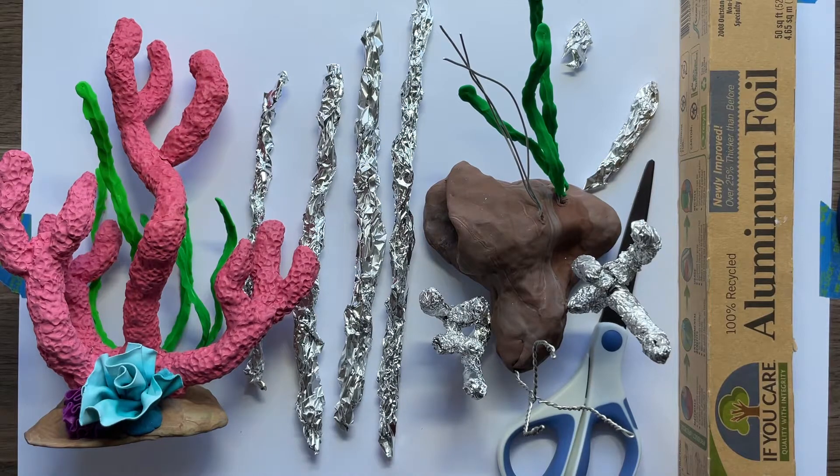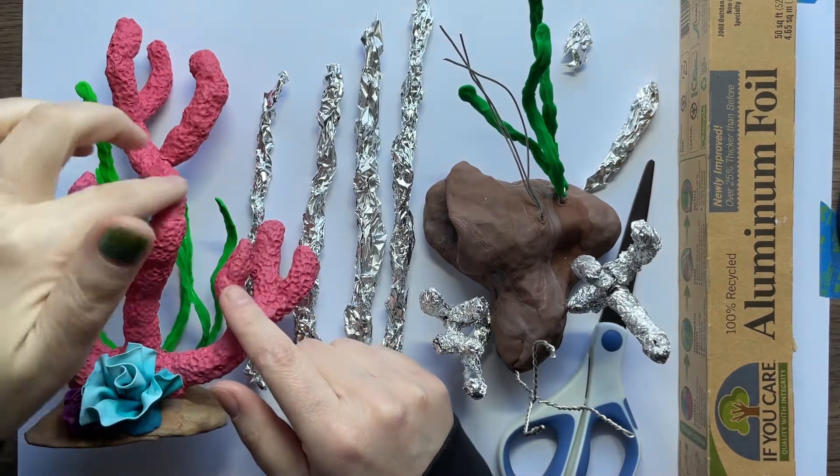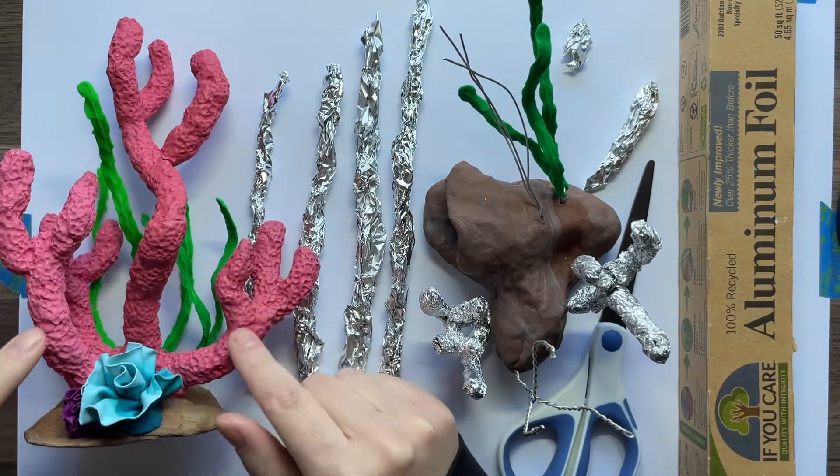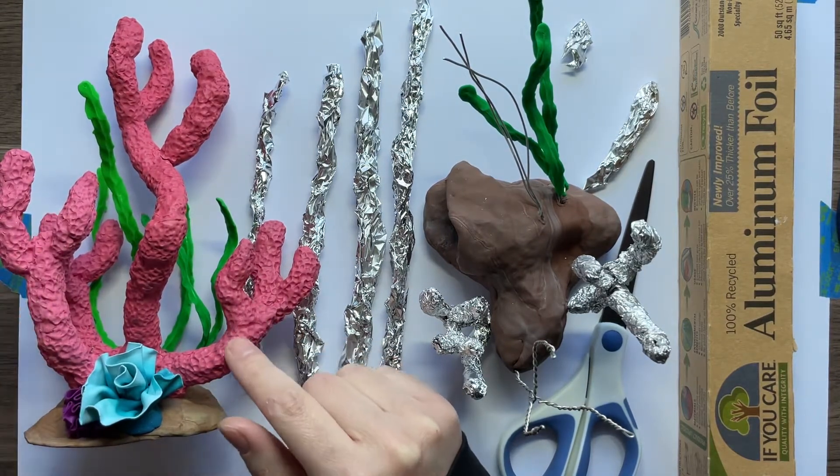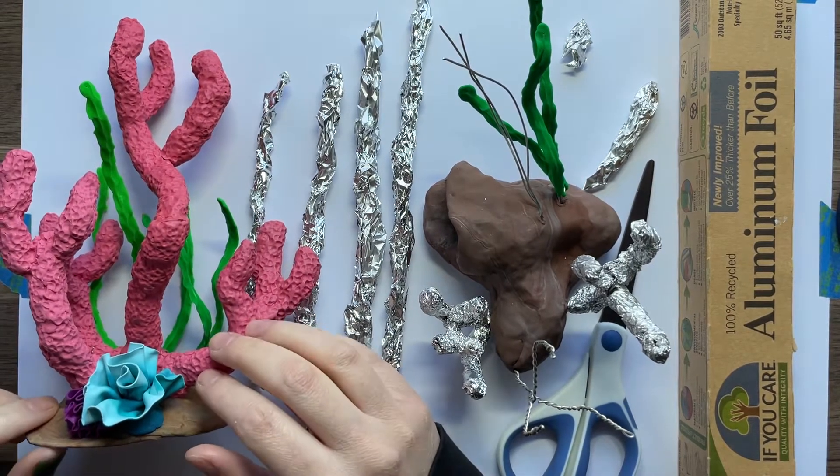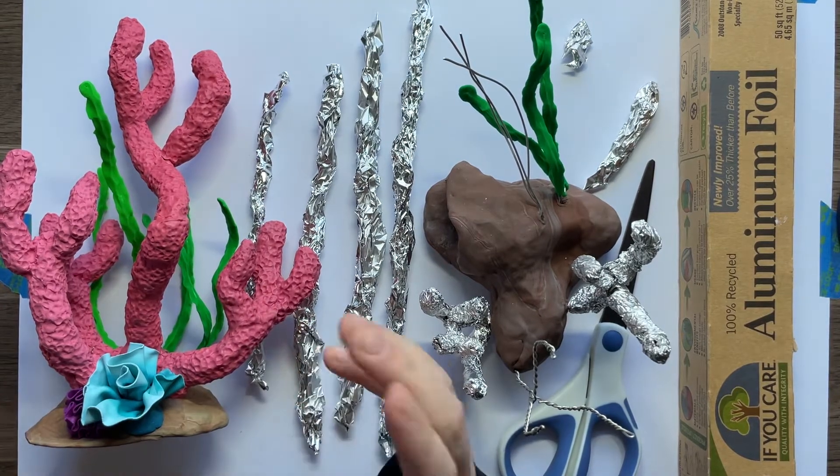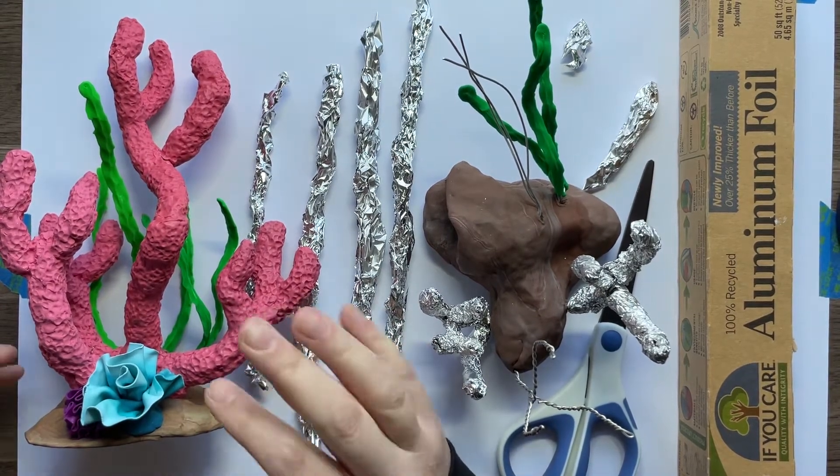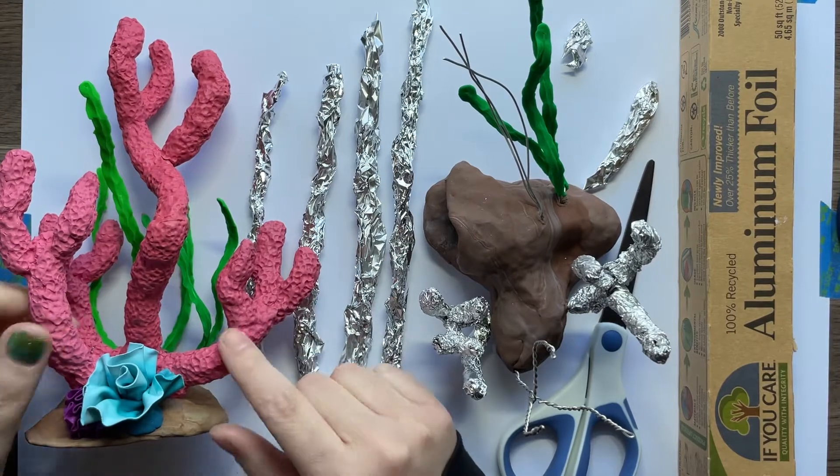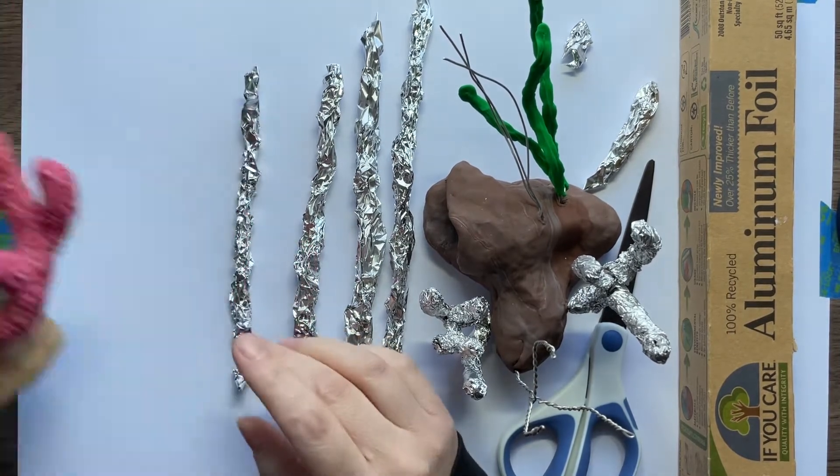Good morning everybody. Today I want to show you how to do this coral type thing right here, which is called a finger sponge. I made mine pink. It comes in pinks and reds and oranges and all kinds of different colors, so you can choose whatever color you want to pick.